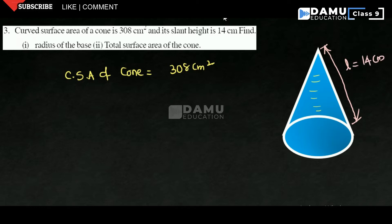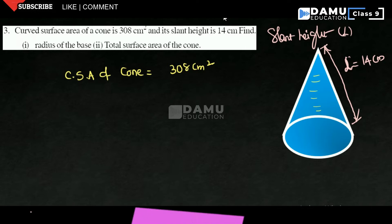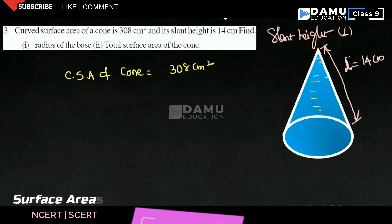The slant height is denoted with capital L. The normal height of the cone is denoted with capital H. The slant height L can be taken from any point along the curved surface. So, L equals 14 cm.